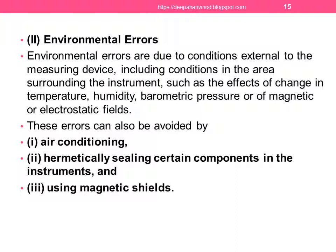Environmental error. These errors are due to conditions external to the measuring devices, including conditions in the area surrounding the instrument, such as effects of change in temperature, humidity, barometric pressure, or magnetic or electrostatic fields. These errors can also be avoided by air conditioning, hermetically sealing certain components in the instrument, and using magnetic shields. These are the methods to avoid environmental error.